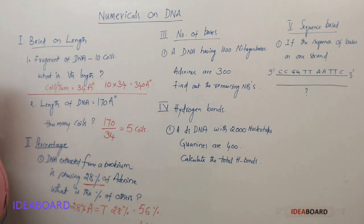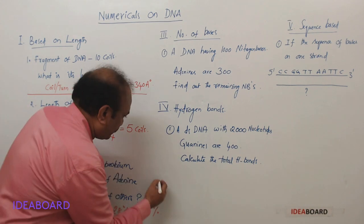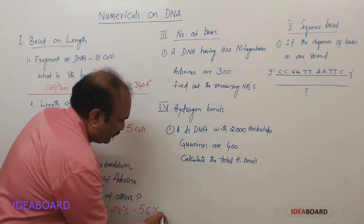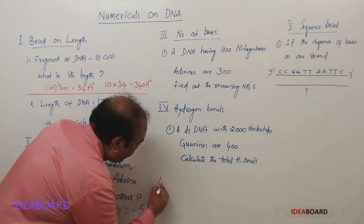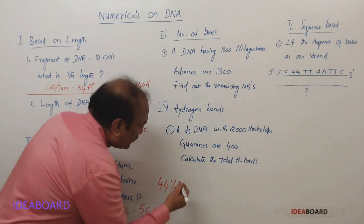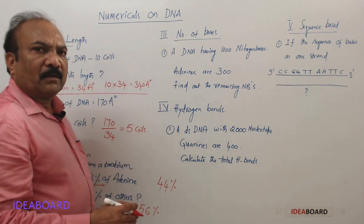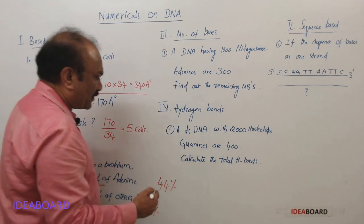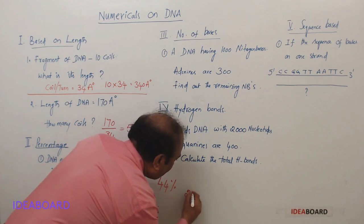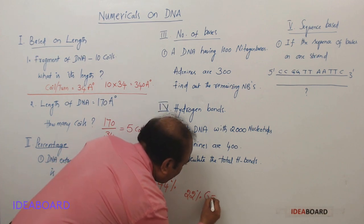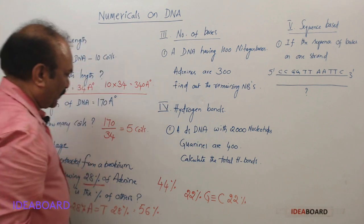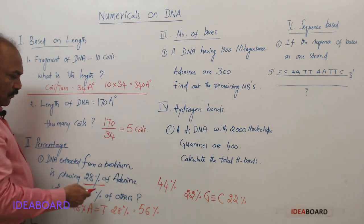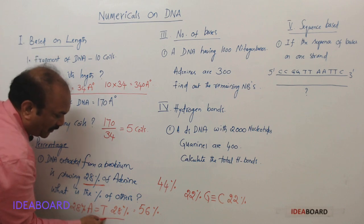Let us distribute this 44 percent among the remaining two nitrogen bases—that is guanine and cytosine. So 56 percent here, the remaining is 44 percent. Let us distribute this 44 percent: guanine will be 22 percent and cytosine is 22 percent. So what is the percentage of thymine here? 28 percent. That is the answer for this question.